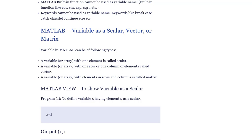Variables in MATLAB can be of the following types: A variable or array with one element is called a scalar. A variable or array with one row or one column of elements is called a vector. A variable or array with elements in rows and columns is called a matrix.